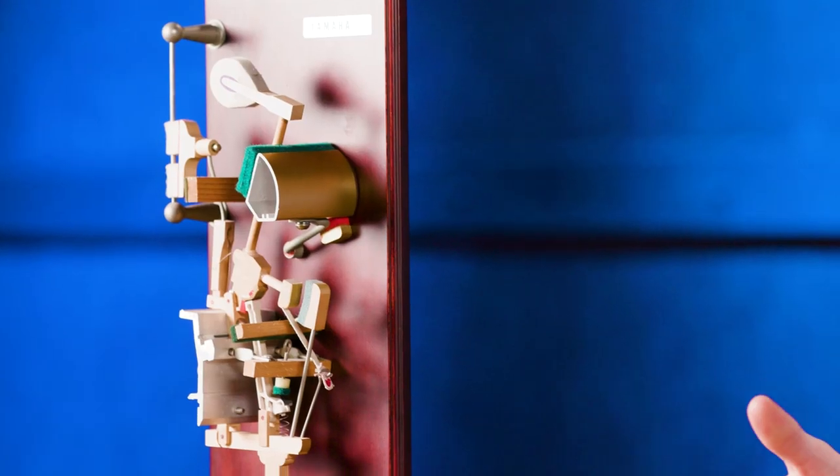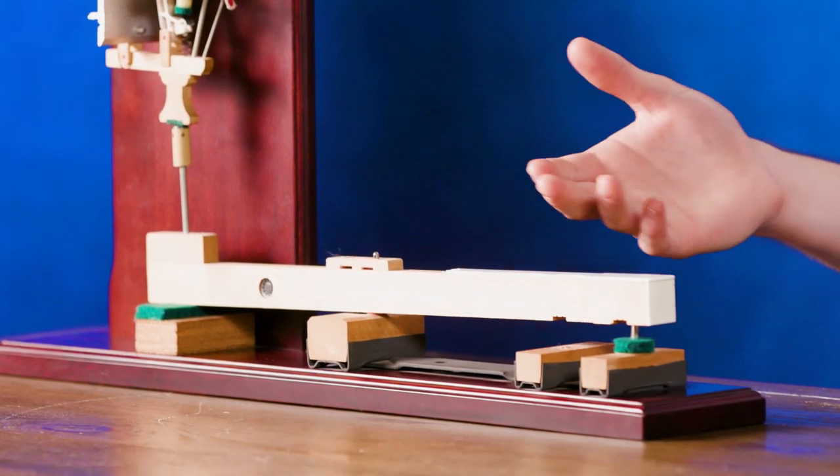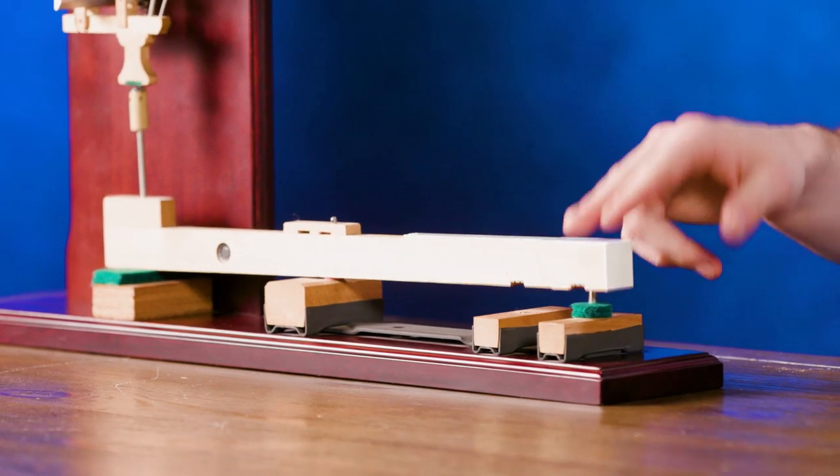The keybed would then include things like the feel weight of the keys, either fully weighted, semi-weighted, or unweighted keys. And you can see that here with the model here, which is from a grand piano, which has a weighted feel, like that.